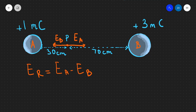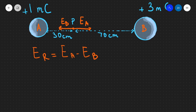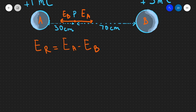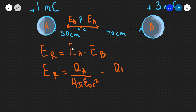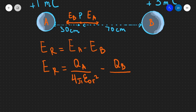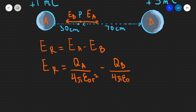Now that we have an expression for the resultant electric field, we can use our formula for a point charge or a spherical charge — it's exactly the same formula — to find out the magnitude of the resultant electric field. So ER will be equal to the electric field due to A alone, which will be QA over 4πε₀r², minus QB — where QB is just the charge of charge B — divided by 4πε₀r². This distance here is to A and this distance is to B.